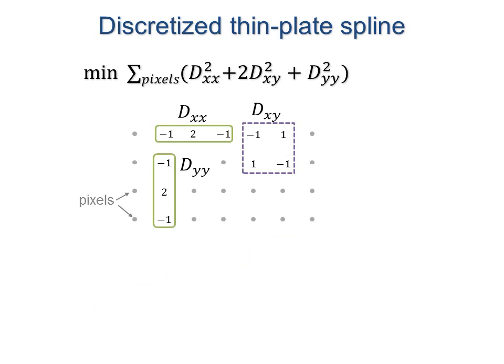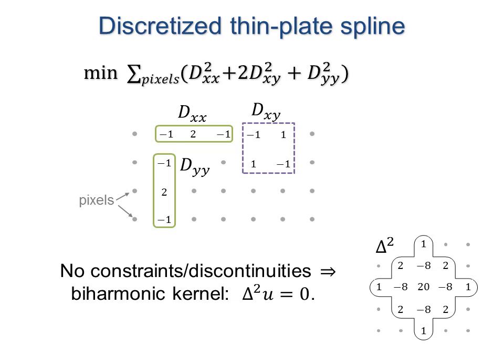The discretized least squares objective has terms that correspond to pixel neighborhoods. In the absence of features, the solution is biharmonic, satisfying this kernel.